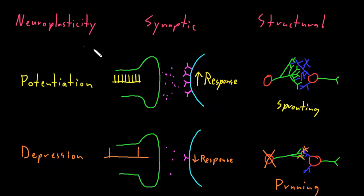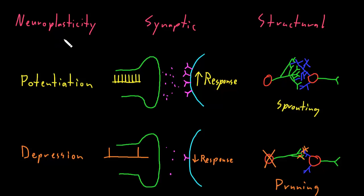So these are a few of the things we know about neuroplasticity, but there's a lot more that we don't understand yet. There's still a lot of research going on trying to understand how all these processes happen and how they contribute to the amazing functions of the nervous system.